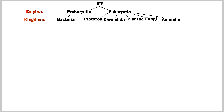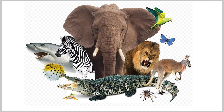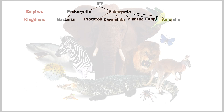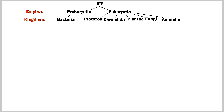The kingdom we're going to focus on most in this video is the animal kingdom, which represents a huge variety. It's important for people to understand that not just elephants, lions, and crocodiles are animals — spiders, mosquitoes, worms, frogs, octopuses, and shrimp all belong to the animal kingdom.